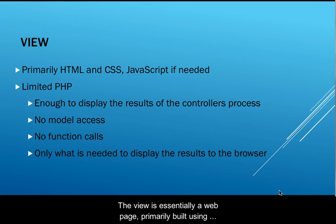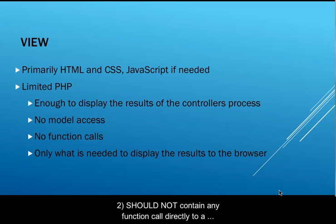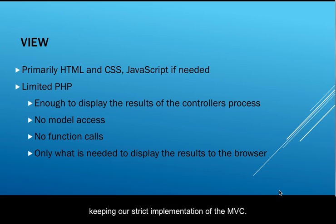The view is essentially a web page, primarily built using HTML, CSS, and JavaScript, with a small amount of PHP. The PHP should be, first, only enough to display the result of the controller's process, and second, should not contain any function calls directly to a model. This avoidance of calling anything from the model within the view is part of keeping our strict implementation of MVC.